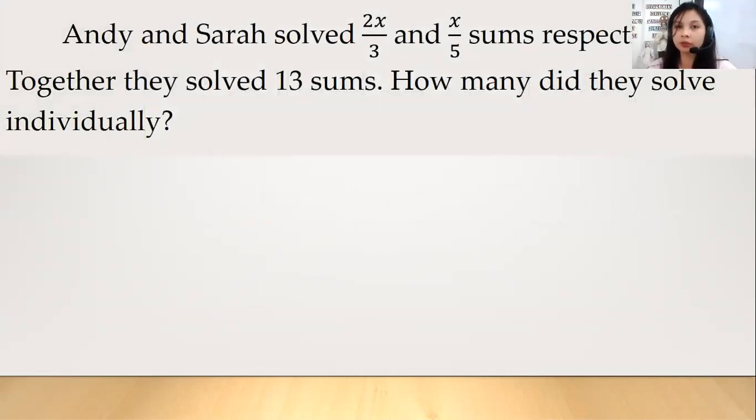So let's have this first example. Andy and Sarah solved 2x over 3 and x over 5 sums respectively. Together they solved 13 sums. How many did they solve individually? So dito po, ayan yung magiging equation natin. Kaya ginawa ko siyang addition, kasi ang nakalagay dyan is sums po. So ibig sabihin nun addition yung involved operation natin.